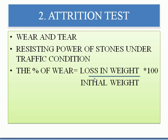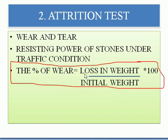For the attrition test, you have to take the initial weight and the final weight, then calculate the loss in weight. The formula is: percentage of wear = loss in weight divided by initial weight, multiplied by 100. For a good stone, the wear should be less than 3%.